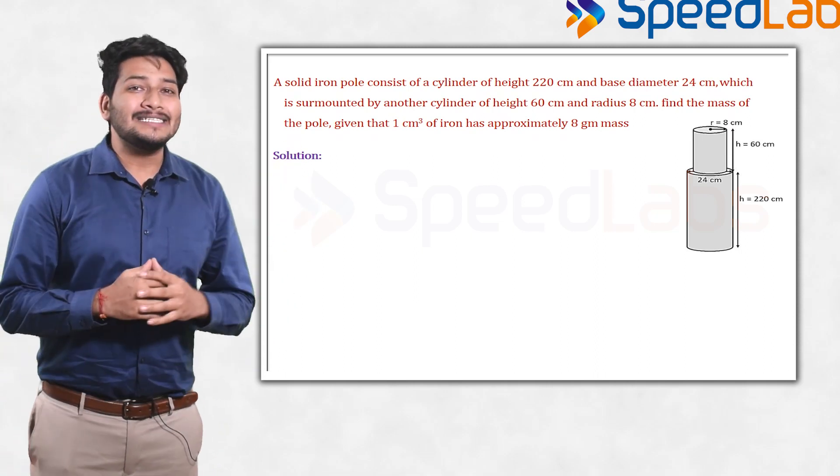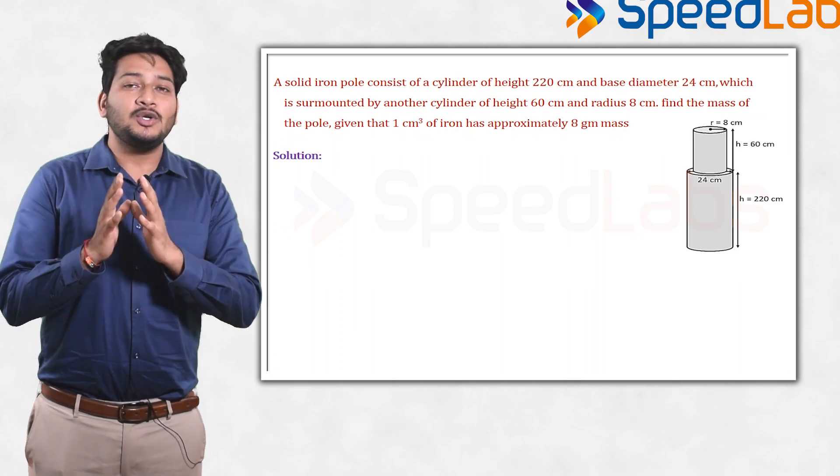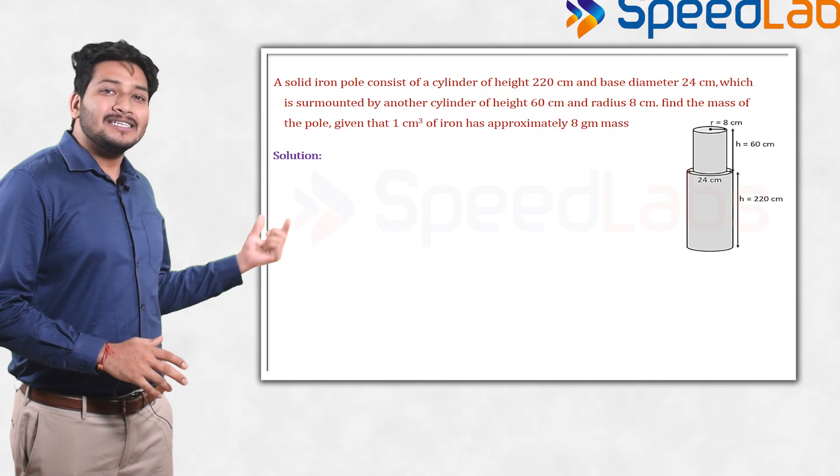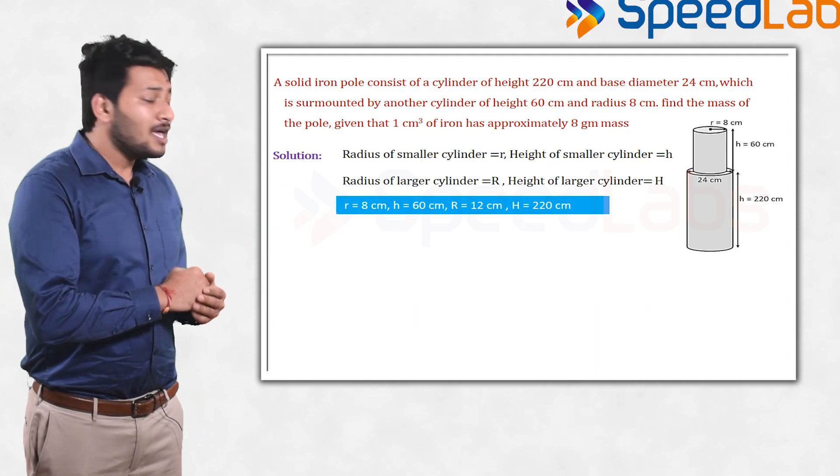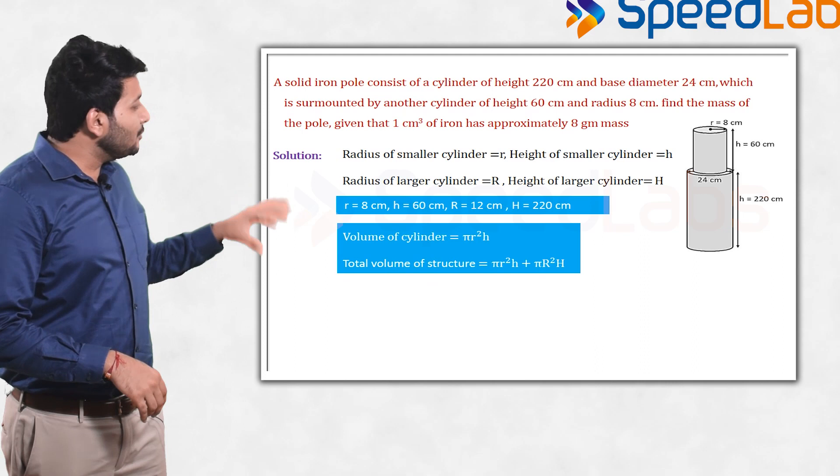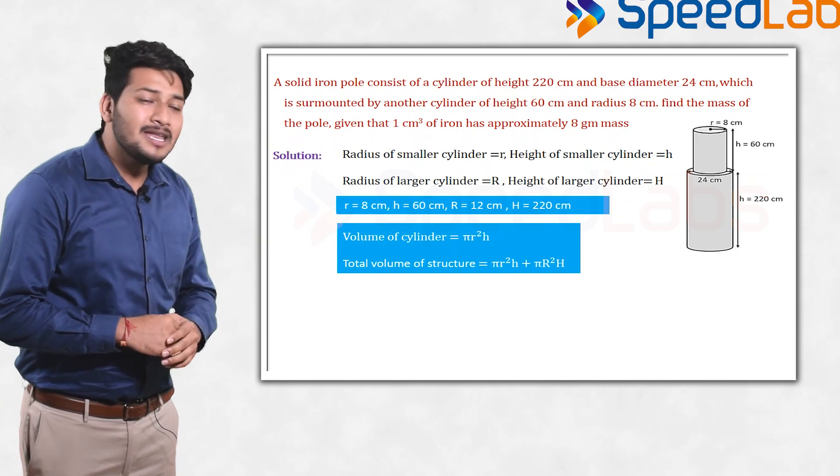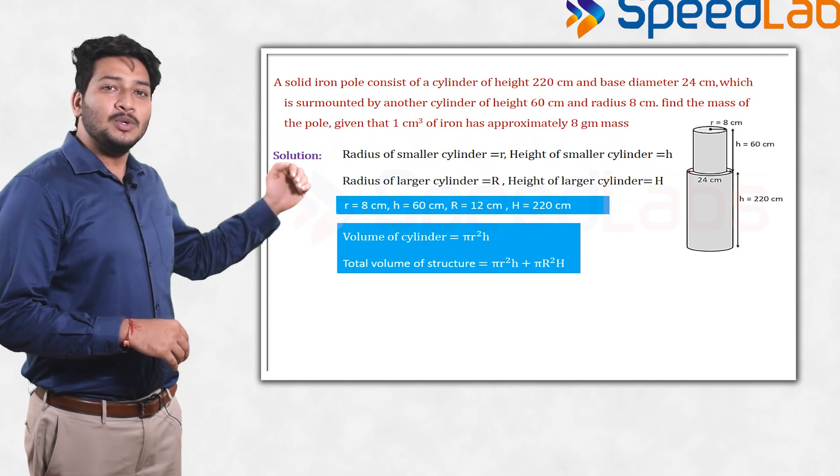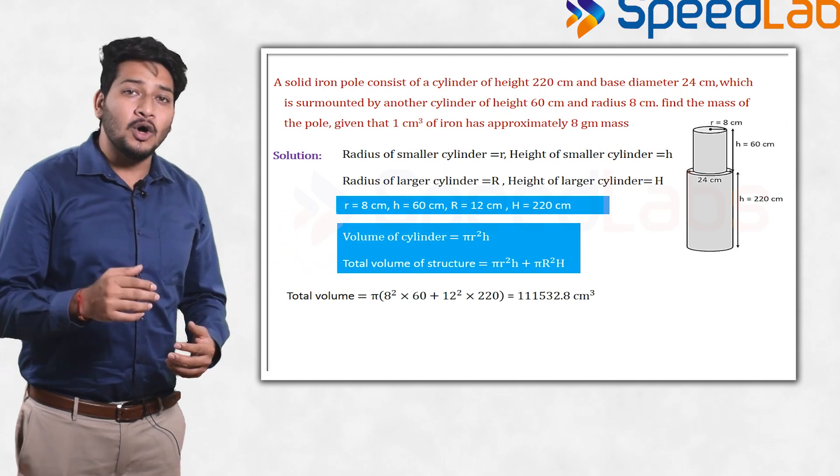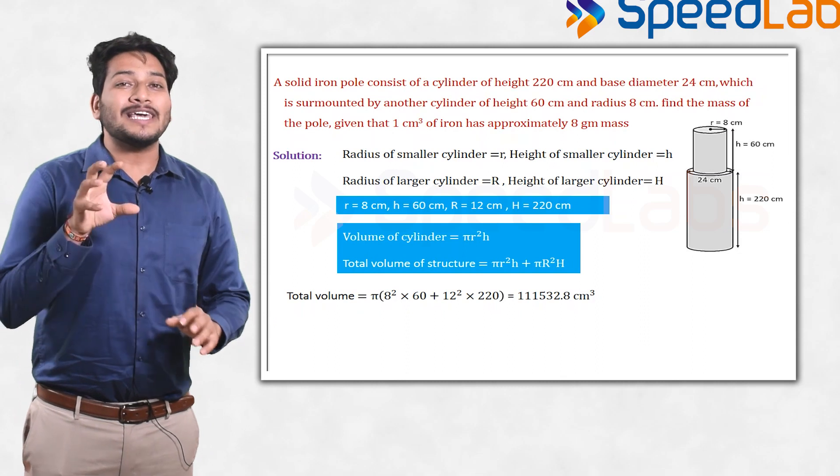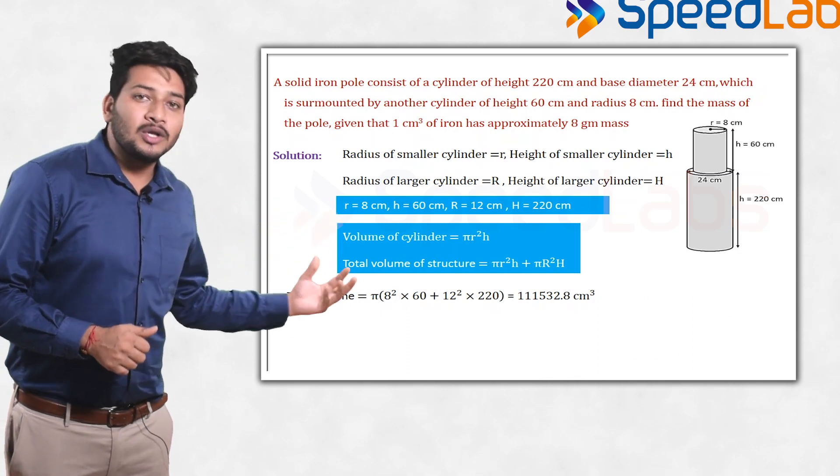This problem I am taking from the topic area and volume. In this, an iron pole consists of two cylinders. What is the volume of a cylinder? It is π into r² into h. You have the radius and height of both cylinders, so in this way you can calculate the total volume of the iron pole. Now you are supposed to calculate total mass. To calculate total mass, the mass of unit volume is given to you, so multiply that by the total volume and you will get the total mass of the iron pole.